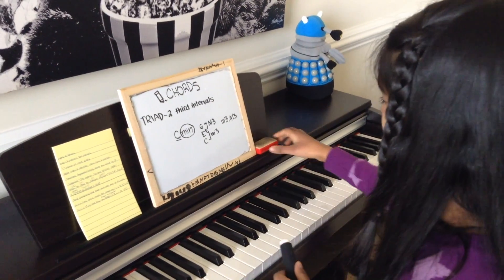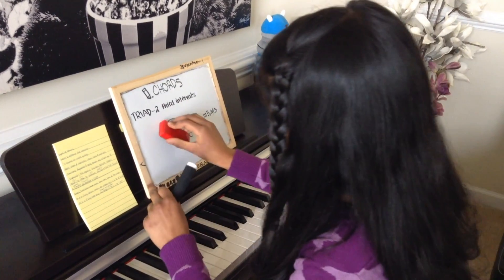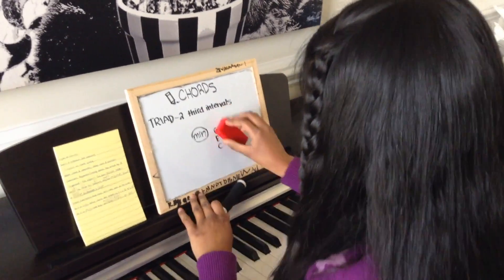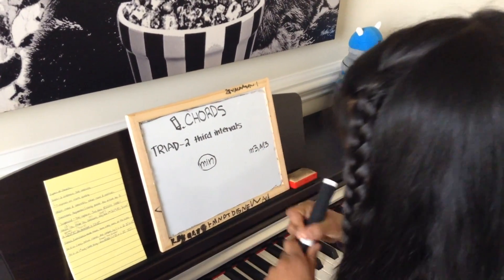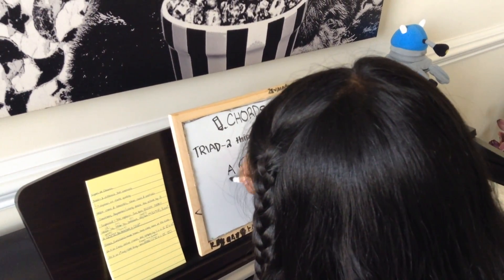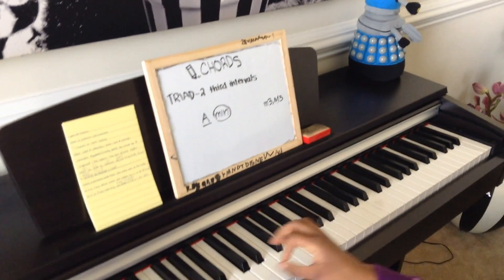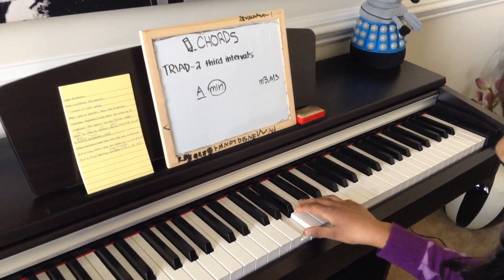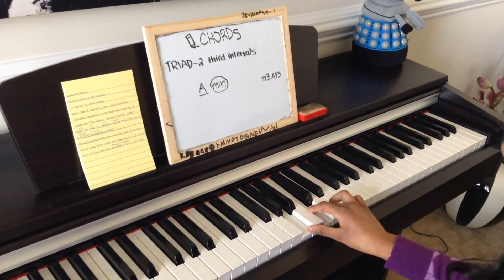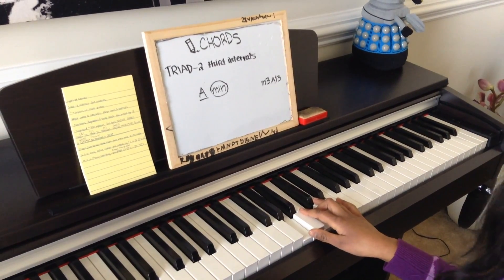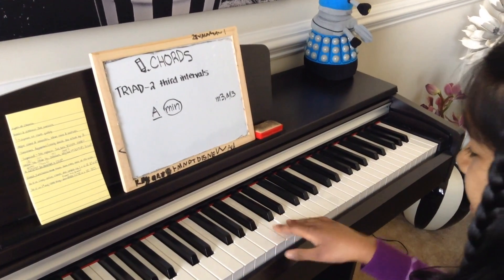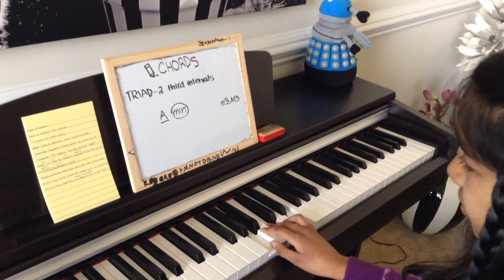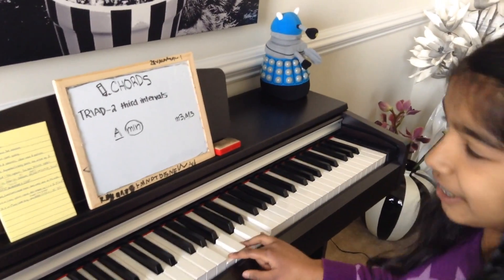Now let's try A minor. You start at A and go a minor third up, which would be C, and then a major third up from C to get to E. That's your A minor chord.